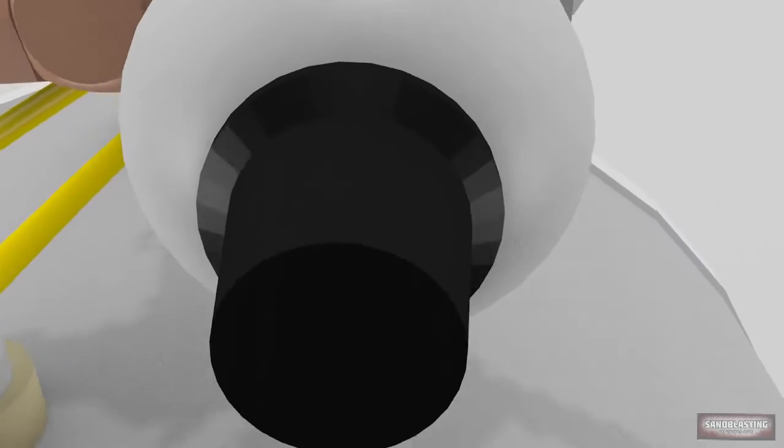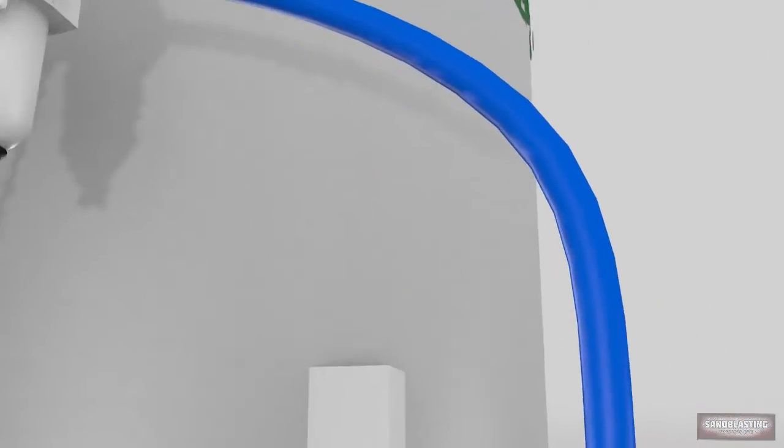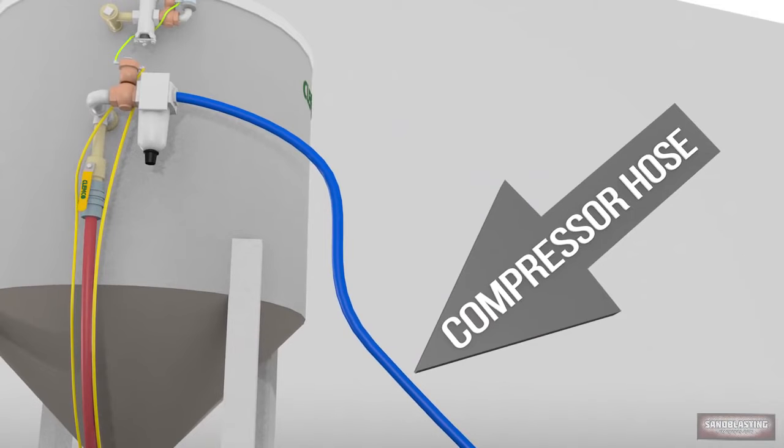The air filter and moisture separator. This keeps the flow of abrasive smooth and moisture-free. This accessory is optional but recommended for humid environments.